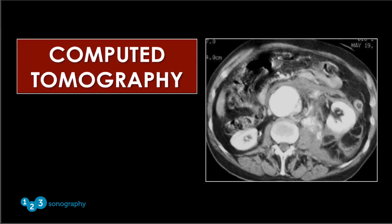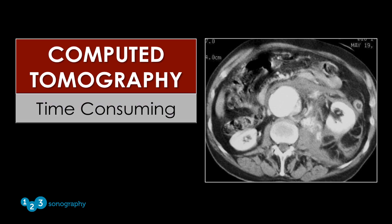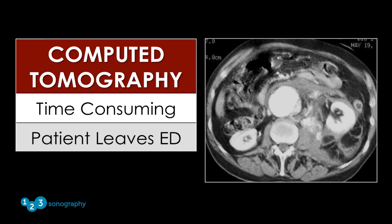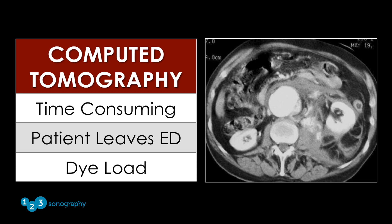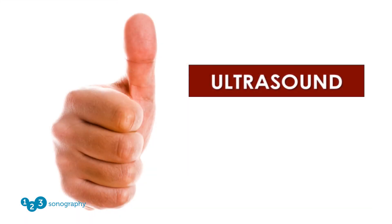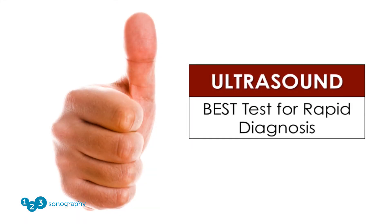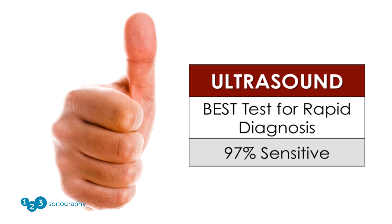Computed tomography also has limitations in that it is time consuming, requires the patient to leave the emergency department, and gives a contrast dye load to the patient. Ultrasound is the best test for the rapid detection of abdominal aortic aneurysm, and images can be generated at the bedside within minutes. The test is also very sensitive for detecting aortic aneurysmal disease.